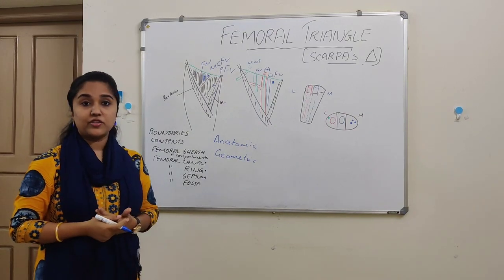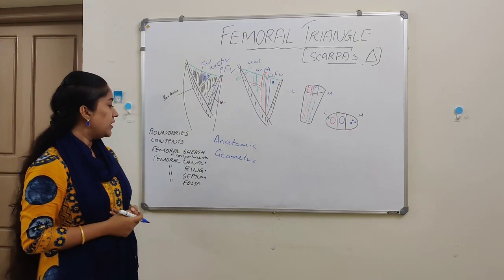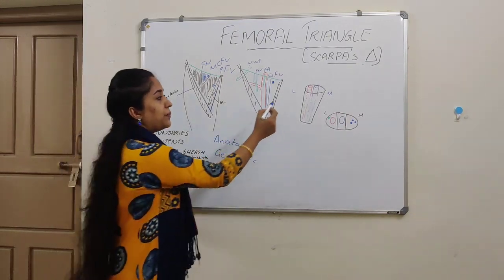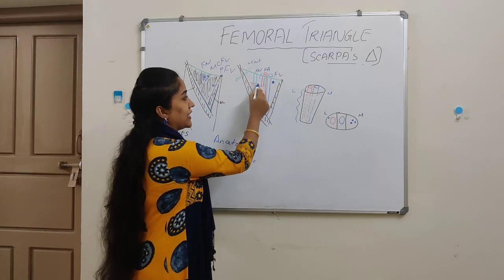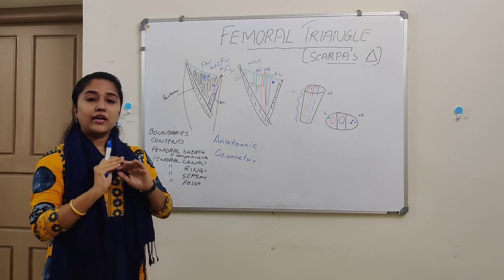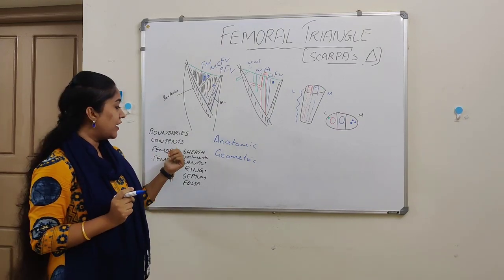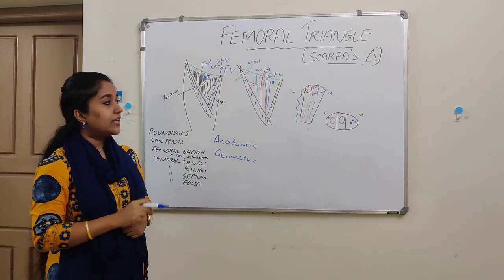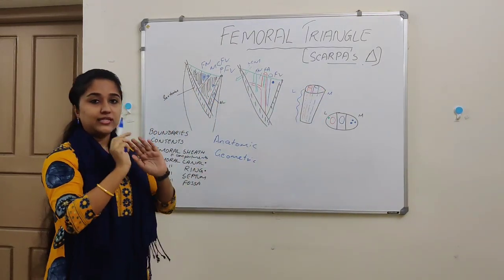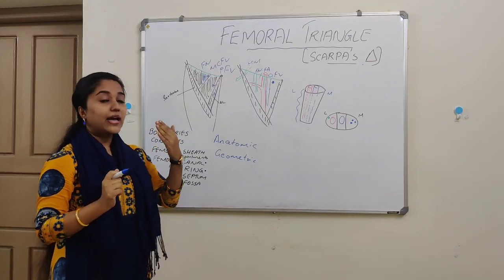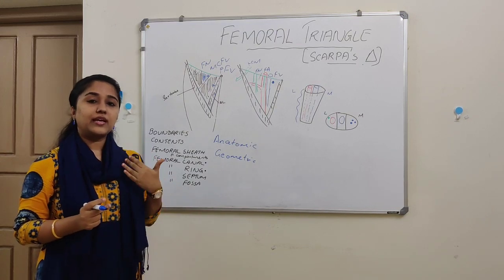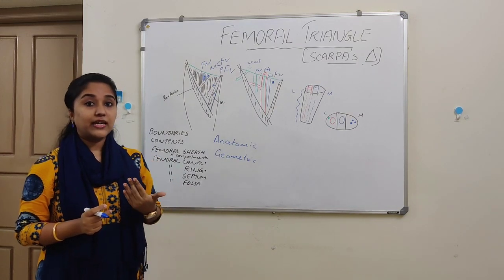These are the main contents of the femoral triangle. Now we will see what is the femoral sheath. The upper 3 to 4 cm of the femoral vessels — that is the femoral vein and the femoral artery — are enclosed within a sheath known as the femoral sheath, which has an anterior layer and a posterior layer. The anterior layer is known as the fascia transversalis, whereas the posterior layer is referred to as fascia iliaca.